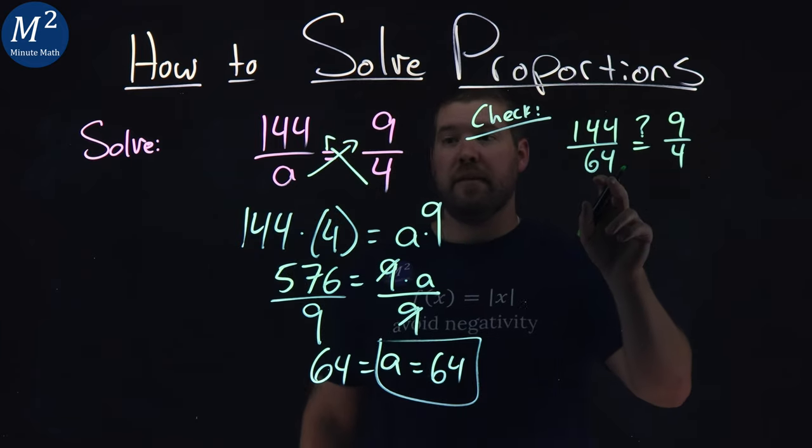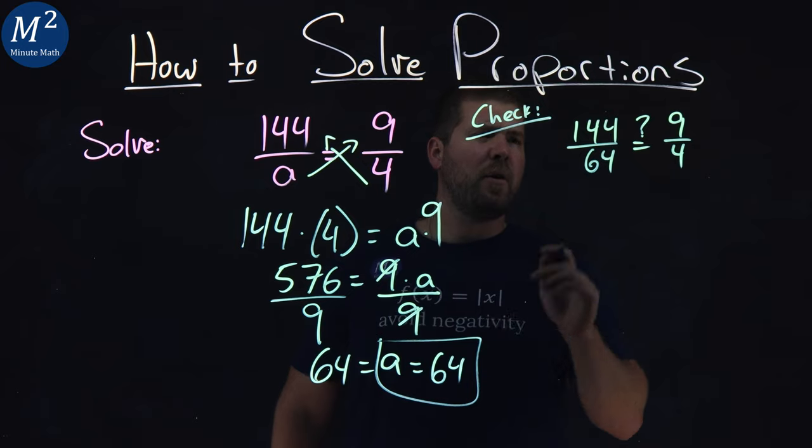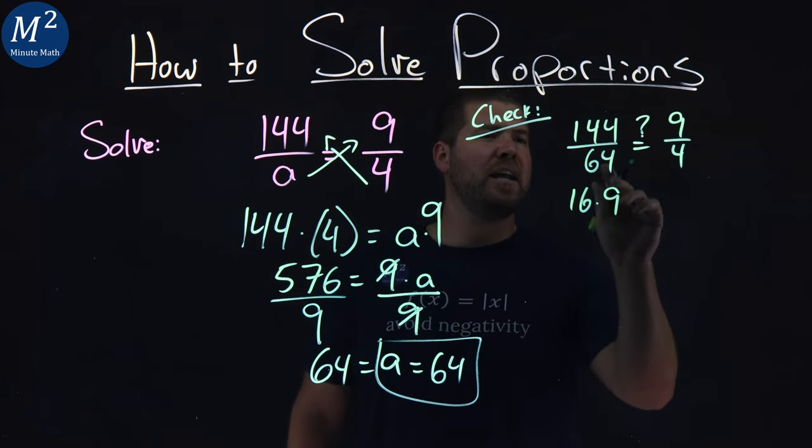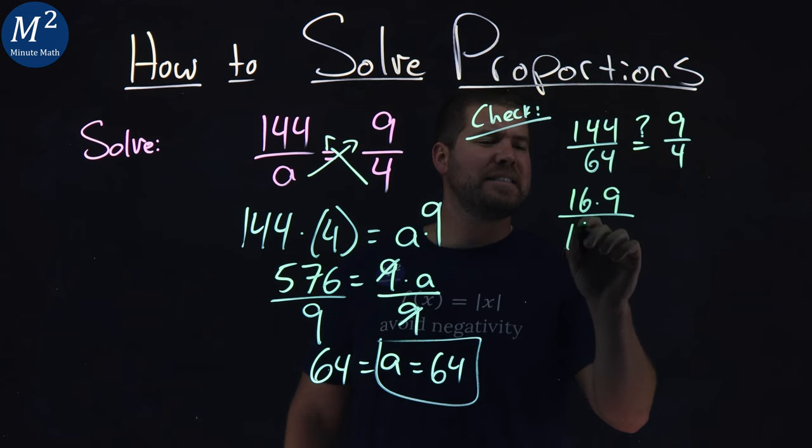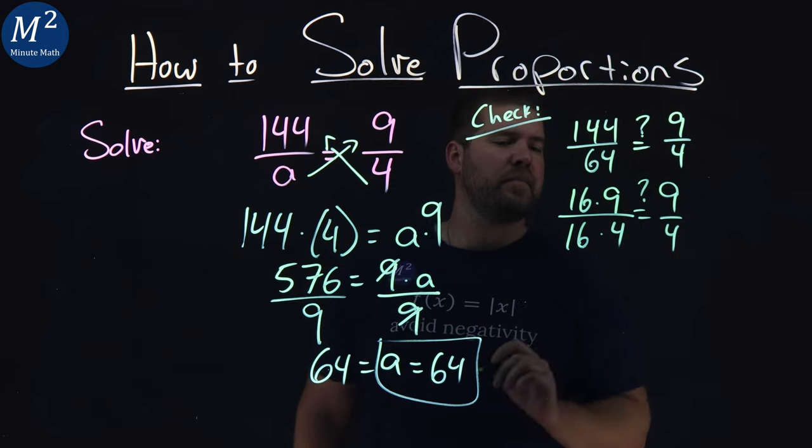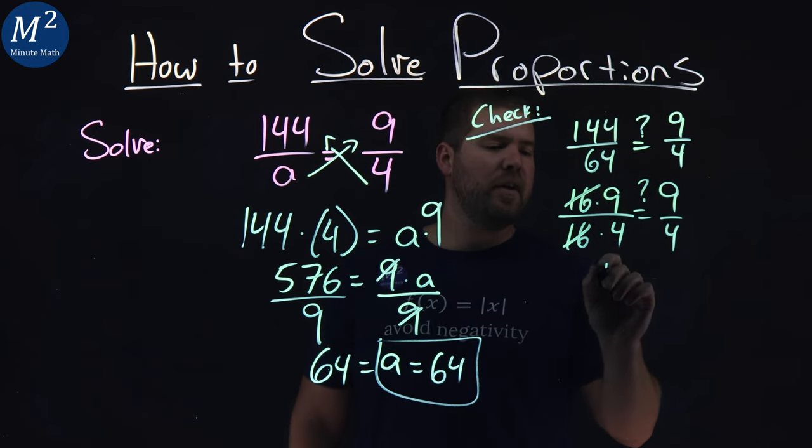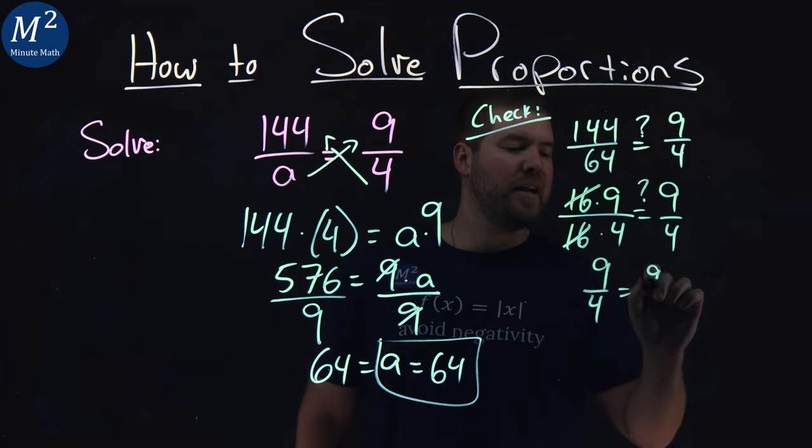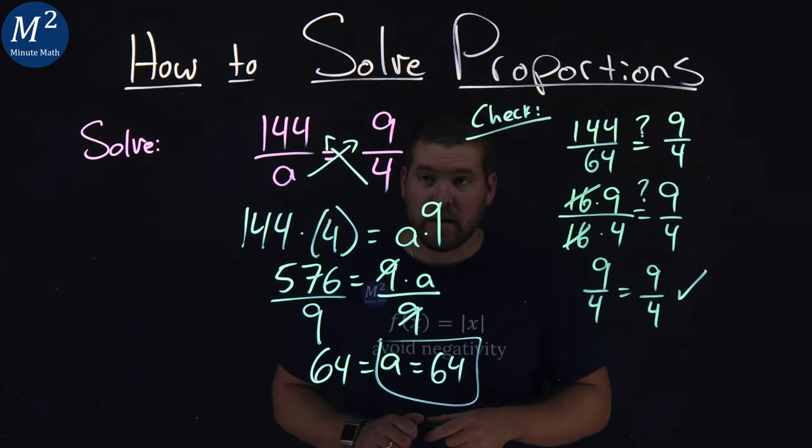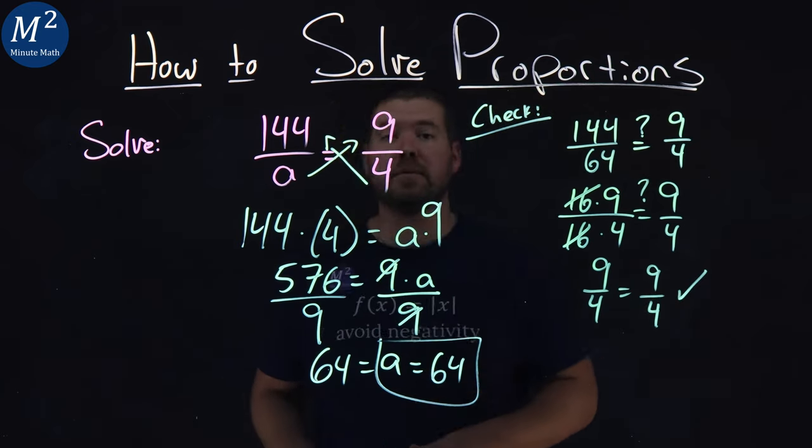144 and 64. Well, both of them are divisible by 16. 16 times 9 gives me 144, and 16 times 4 gives me 64. The 16s cancel here, and I have 9 fourths equals 9 fourths. Left and right-hand side are equal, confirming that our A value is equal to 64.